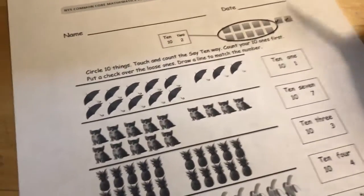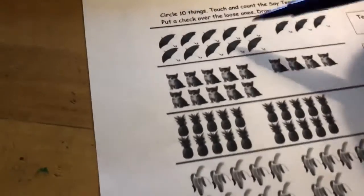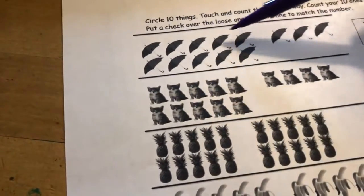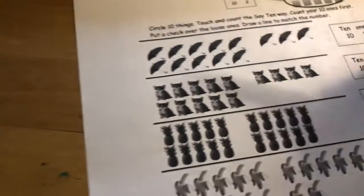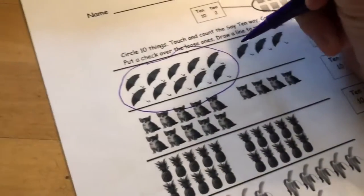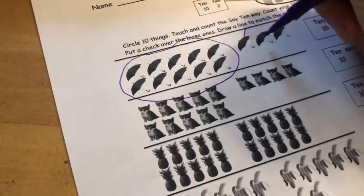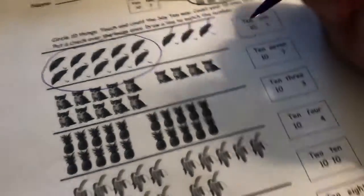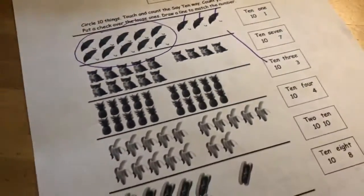So we can start with our umbrellas. We can see our group of 10. 1, 2, 3, 4, 5, 6, 7, 8, 9, 10. And so I would circle it, and then I have 10, 10-1, 10-2, 10-3. If I look over here, I see 10-3, so I can draw a line to match.